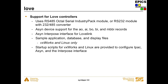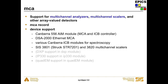The Love module contains support for Love controllers — temperature controllers or relays — though I'm not sure there are any left at APS. MCA provides support for multi-channel analyzers and multi-channel scalers. If you're doing spectroscopy without fly scans, most beamlines use the Canberra AIM module, though there's another Ethernet multi-channel analyzer module as well. It also has support for Canberra instrument control bus modules — high voltage power supplies and amplifiers — and support for the Struck multi-channel scalers (SIS), which are used to store counts acquired during fly scans.